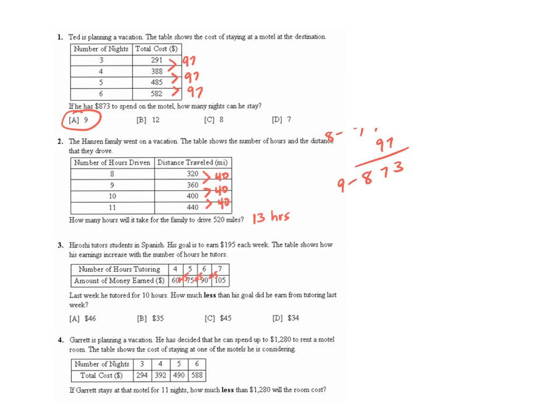Last week he tutored for 10 hours. How much less than his goal? There's a keyword. How much less than his goal did he earn from tutoring last week? Well, his goal was to earn $195 each week. So if he's earning $15 an hour, 10 times 15 equals $150 that he earned.